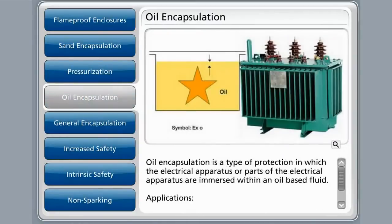Oil encapsulation is a type of protection in which the electrical apparatus, or part of it, is immersed within an oil-based fluid. The general application for this type of protection would be used for switchgear units, circuit breakers, and transformers.